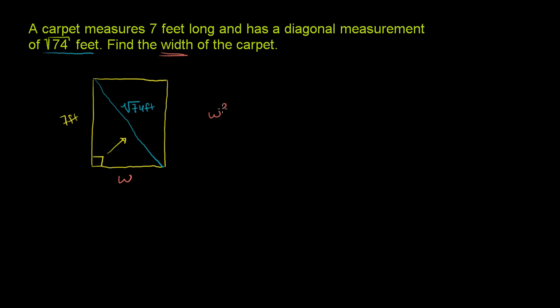So we get W squared, this side squared, plus 7 squared, this other side squared, is going to be equal to the hypotenuse squared, square root of 74 squared.